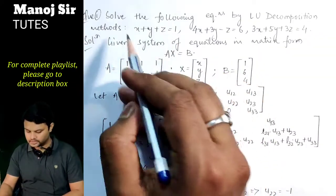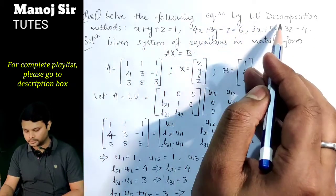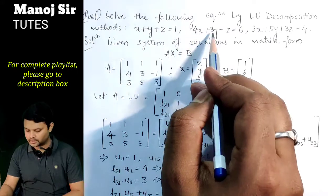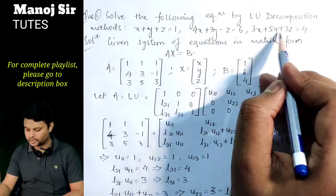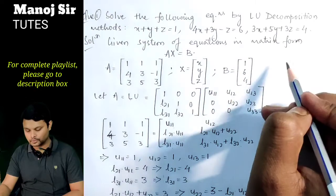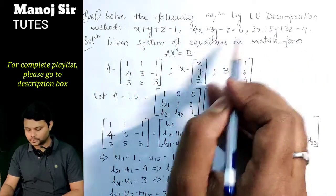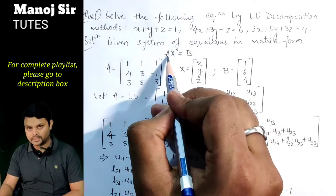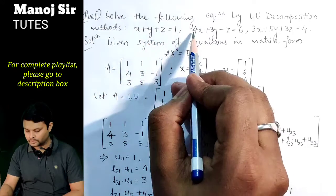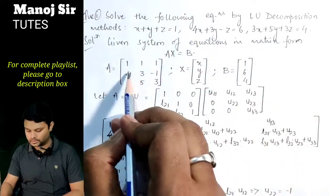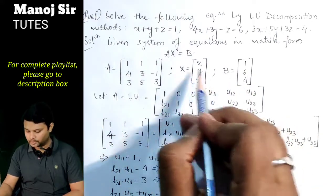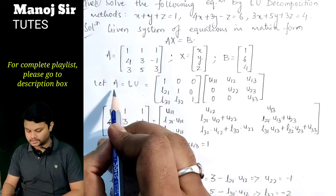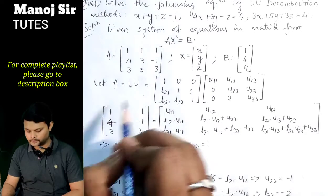The problem says: solve the following system of equations by LU decomposition method. The equations are: x + y + z = 1; 4x + 3y − z = 6; 3x + 5y + 3z = 4. First we write the equations in matrix form Ax = b. The coefficient matrix A is [[1,1,1],[4,3,−1],[3,5,3]], x is [x, y, z], and matrix b is [1, 6, 4].